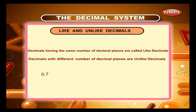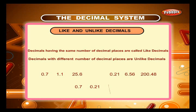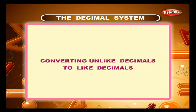Thus, 0.7, 1.1 and 25.6 are like decimals. So are 0.21, 6.56 and 200.48. But 0.7, 0.21 and 6.323 are unlike decimals.